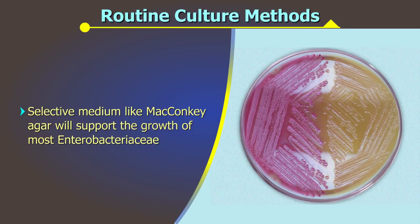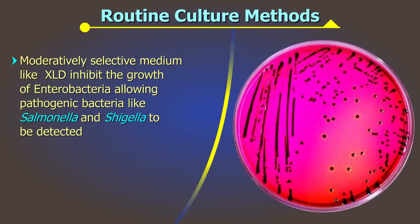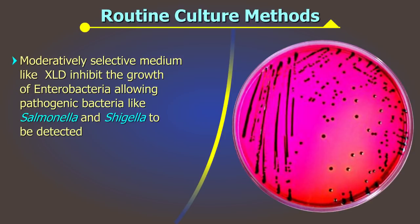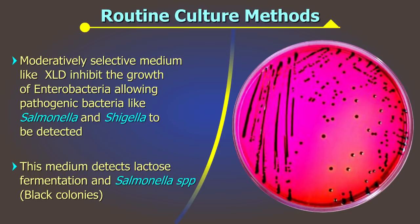All lactose-negative colonies should be tested further, ensuring detection of pathogenic bacteria like Vibrio. Moderately selective medium like Xylose Lysine Deoxycholate agar (XLD) inhibits the growth of most Enterobacteria, allowing pathogenic organisms like Salmonella and Shigella to be detected. This medium, along with detection of lactose fermentation, also detects the production of hydrogen sulfide by the formation of black colonies, which is characteristic of some Salmonella species.